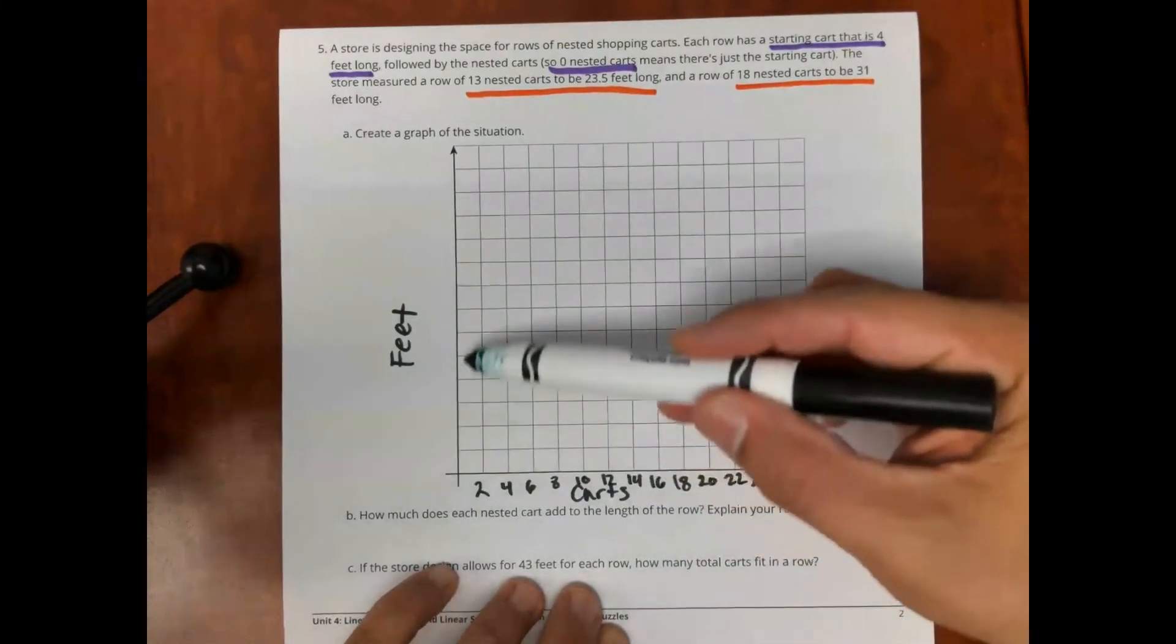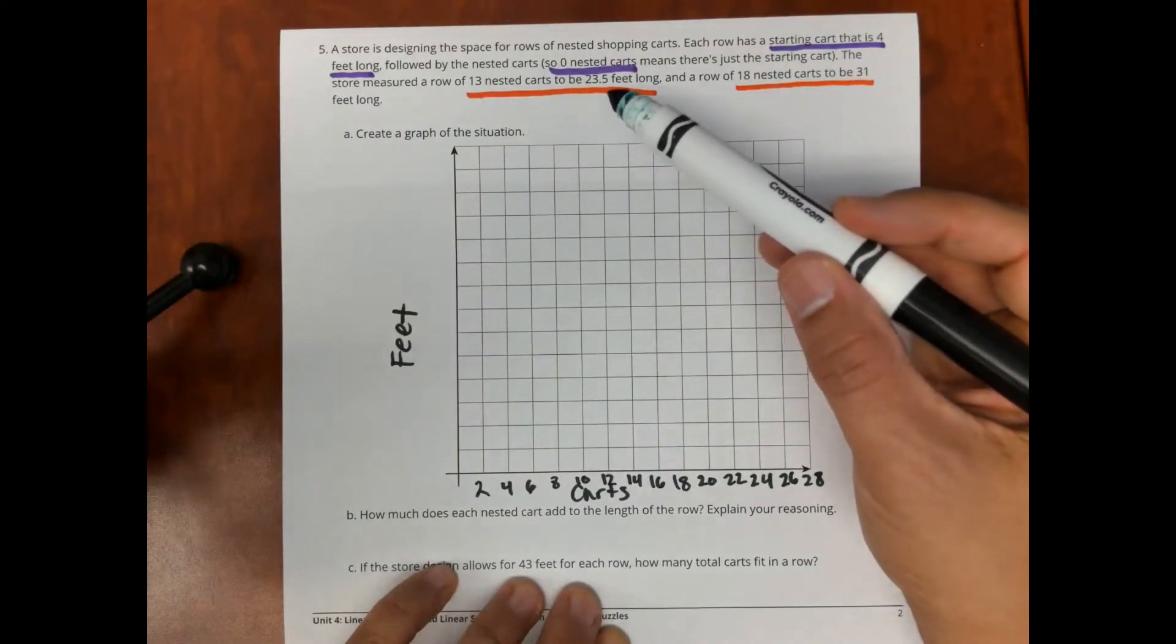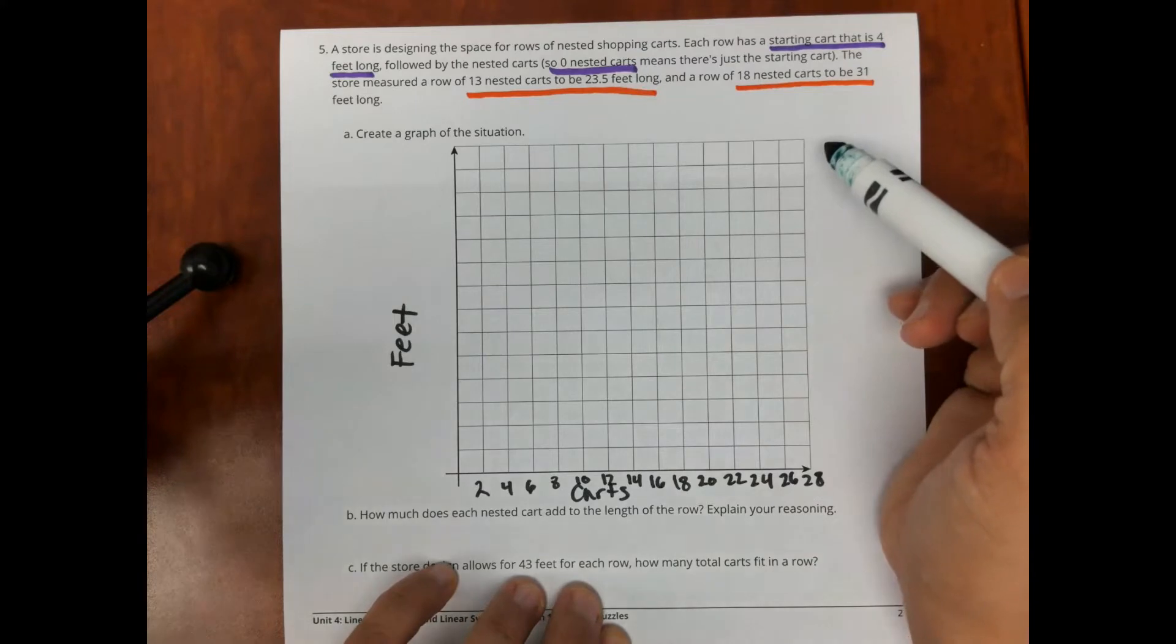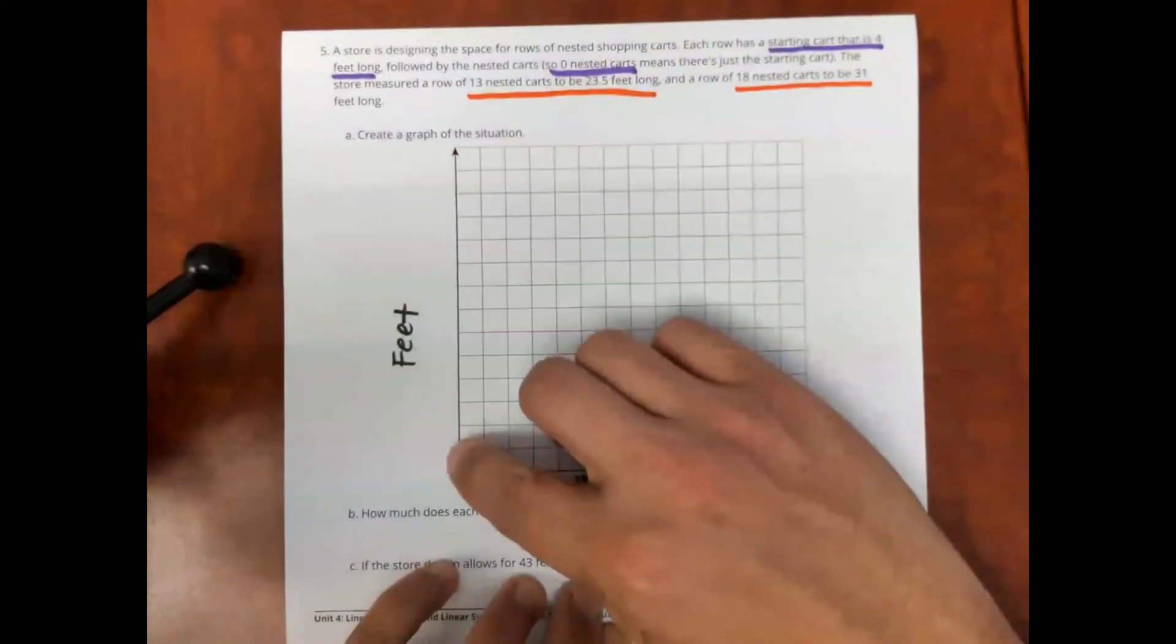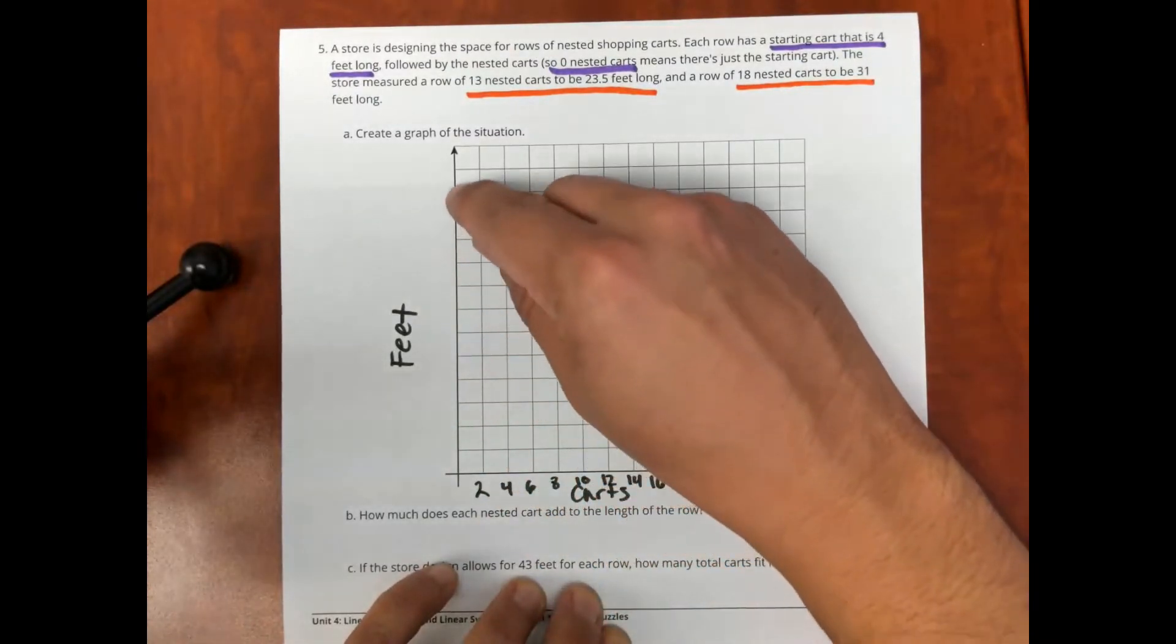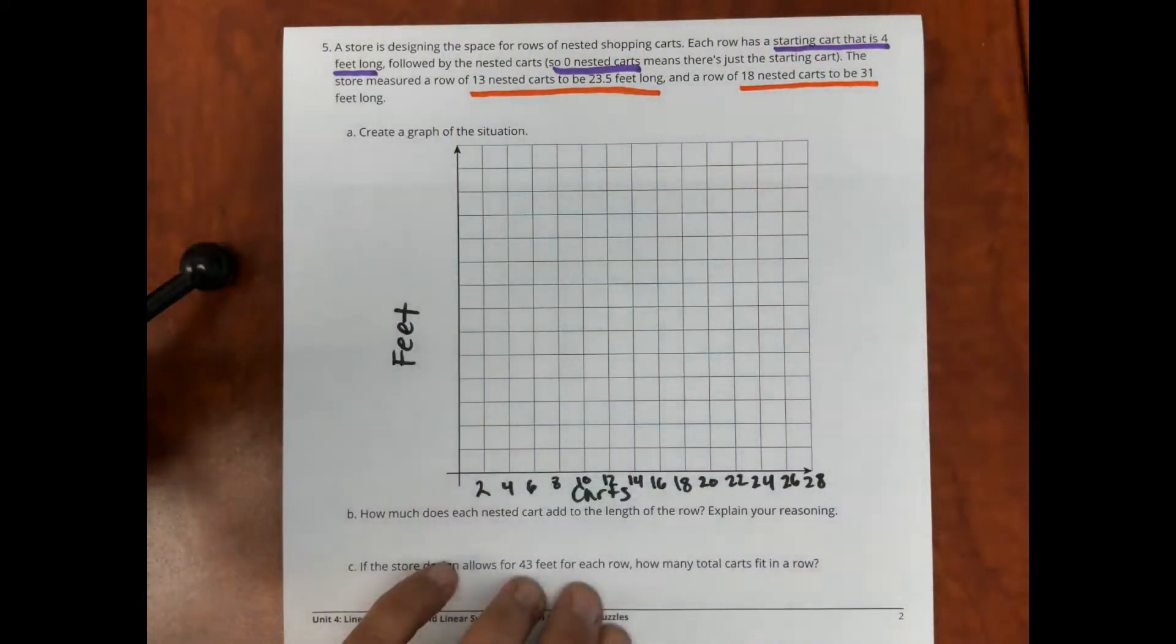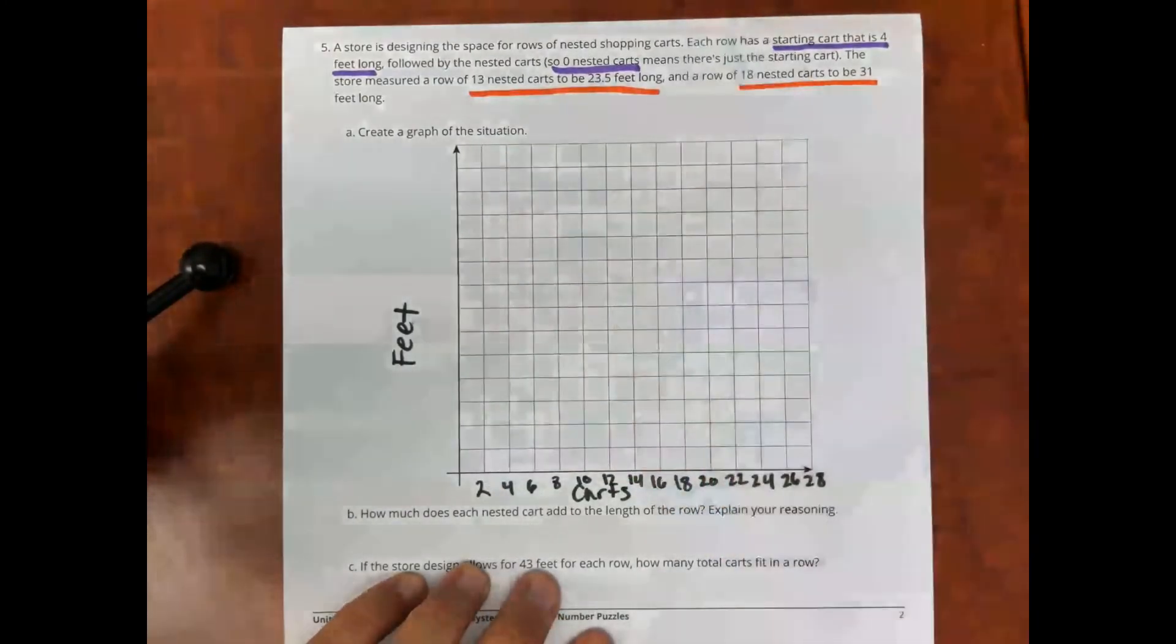Okay, now the axis for feet, I want you to see here, I go all the way up to 23 and a half and 31. So, again, I'm not going to go by 1s because I'm not going to have enough. So, I'm going to go by 4s on this axis.